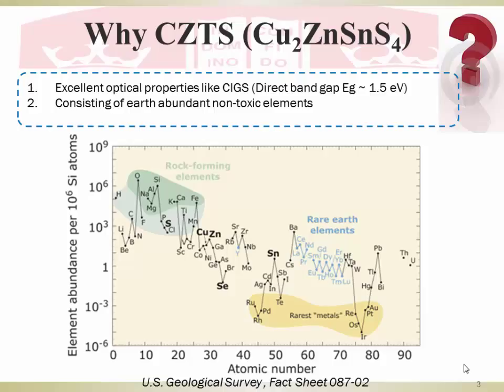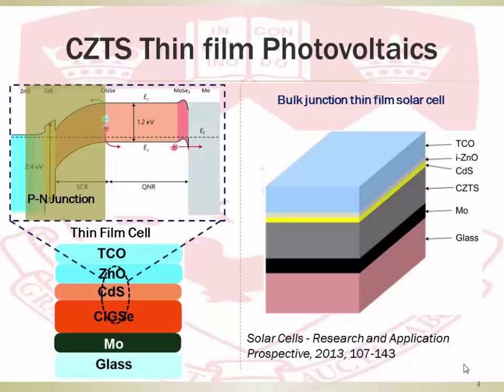For using CZTS in solar cells, it adopts a similar configuration to CIGS, shown on the left. Instead of using CIGS, CZTS acts as a P-type material, and together with zinc oxide and cadmium sulfide, it forms the p-i-n junction that makes the solar cell work.